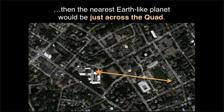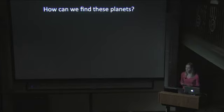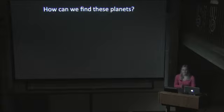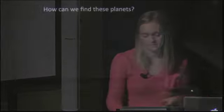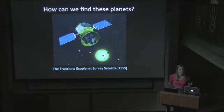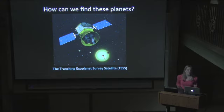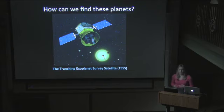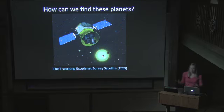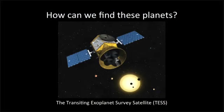Which brings me to the next question: how are we going to find these planets? Kepler was a fantastic mission, but the goal of Kepler was to do statistics, so it stared for a very long time in a very narrow region of the sky. We need something now that will look everywhere and find all of the nearest planets orbiting the brightest stars. That mission exists — it's called the Transiting Exoplanet Survey Satellite, or TESS. This mission is managed by Harvard and MIT and will be launched in 2017. The goal of the TESS mission is to find planets that we can subsequently characterize.